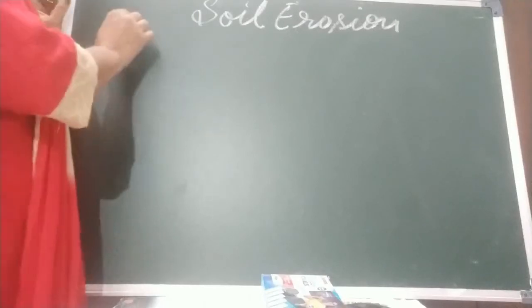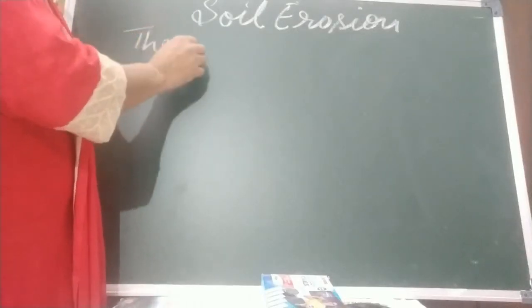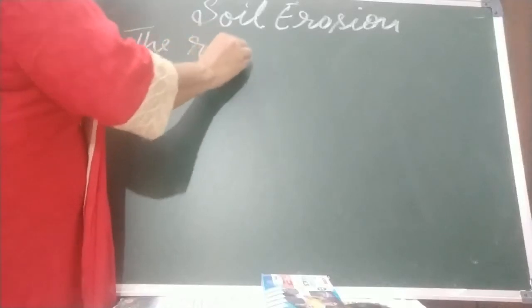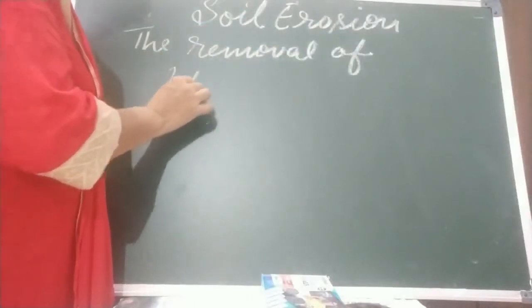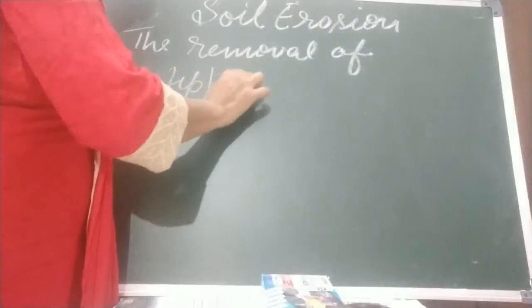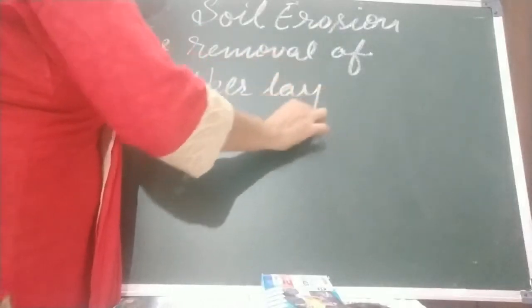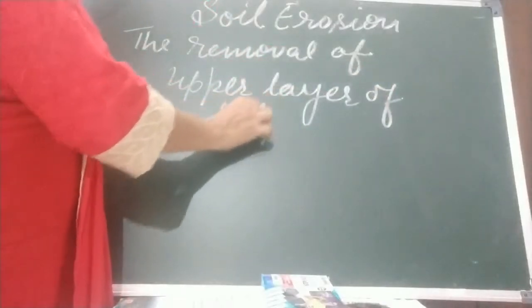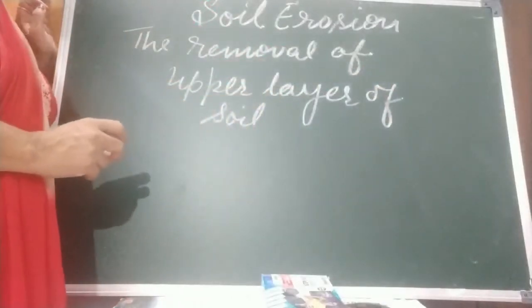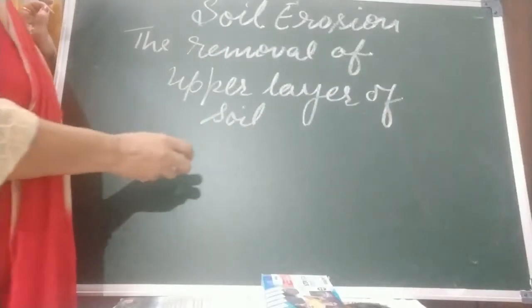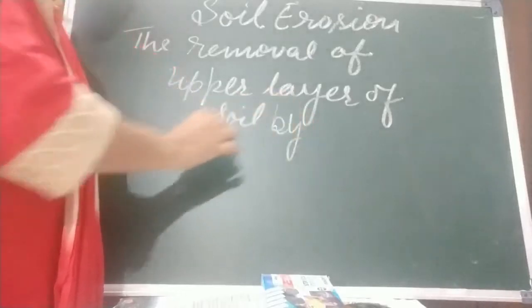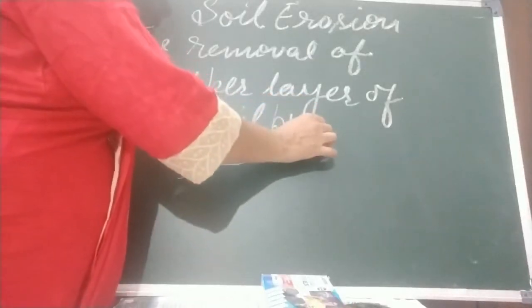What is soil erosion? The removal of upper layer of soil — that is the A horizon, or O horizon. The removal of upper layer of soil by running wind and water is called soil erosion.